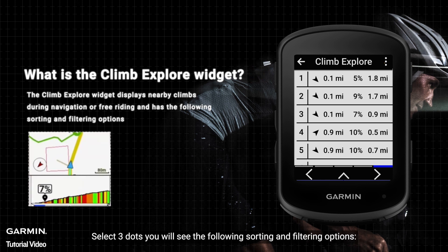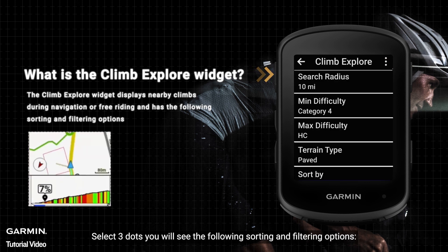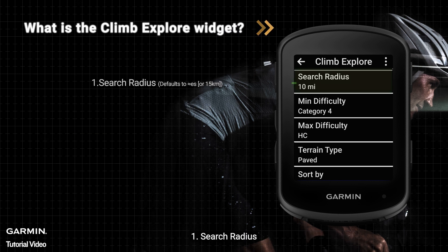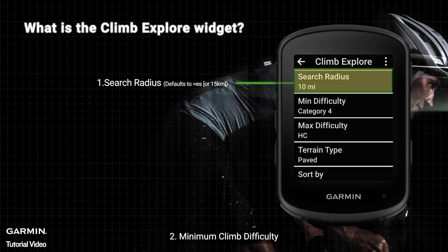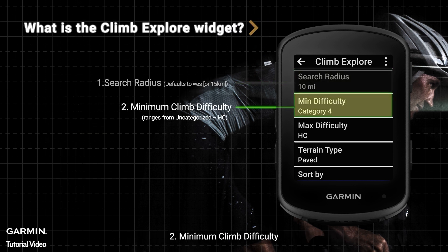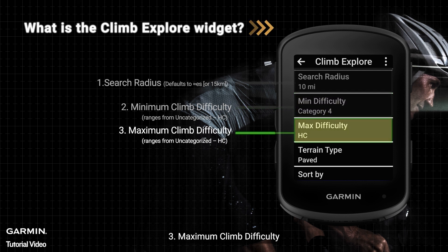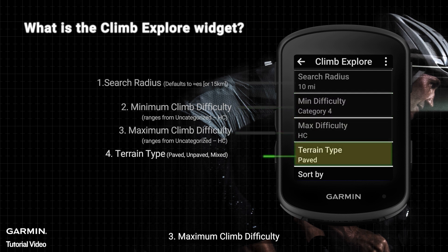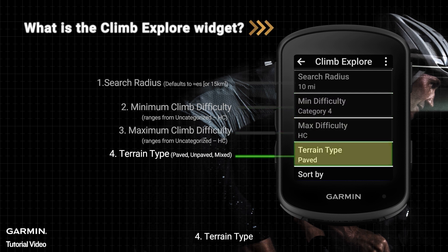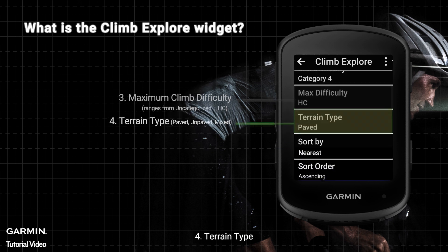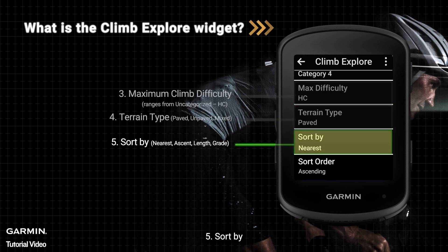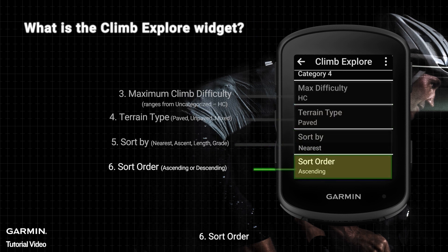Select the three dots and you will see the following sorting and filtering options: 1. Search Radius, 2. Minimum Climb Difficulty, 3. Maximum Climb Difficulty, 4. Terrain Type, 5. Sort By, 6. Sort Order.